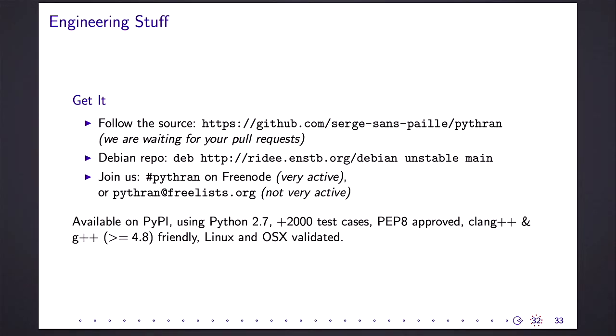So I'm almost at the end. Some engineering stuff. We use GitHub. It's an open source project since the beginning. We are open to pull requests, but take care. I'm very picky with code review. We have a Debian repository. We are very active on IRC. There is someone almost around the clock, especially because we are a French project, but I live here. So we have my colleagues in France. I'm here with a different time frame. We are around the clock on IRC. We also have a mailing list that we use mostly for announcements. There is not much discussion there. Everything is going on on IRC. It's available on PyPI. It's very easy to install using easy install. It's written in Python 2. We only support Python 2, by the way. We don't support Python 3 yet. We have more than 2,000 test cases in our regression suite. It's run automatically every time a pull request is issued. All the code is PEP 8. And we support Clang, GCC as a backend. It's validated on Linux and OSX. So yeah, it should be quite easy to use.